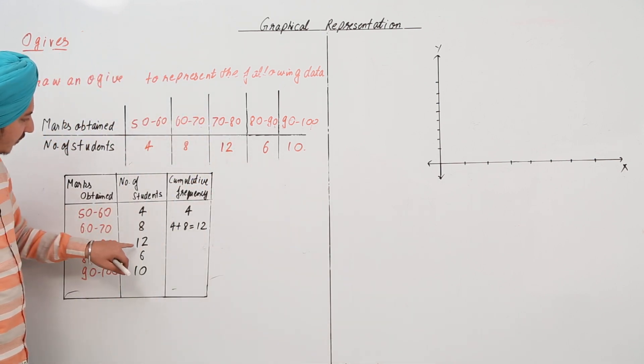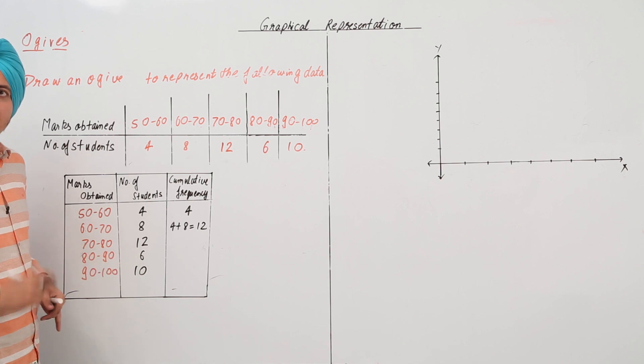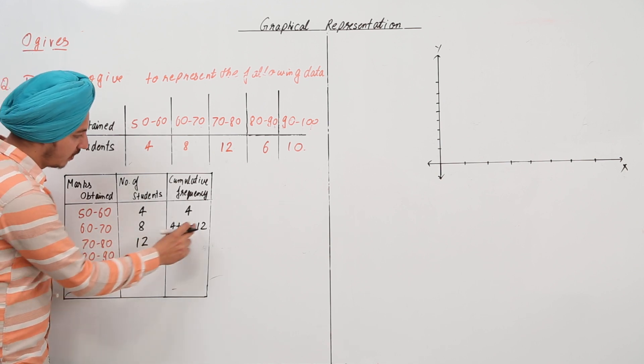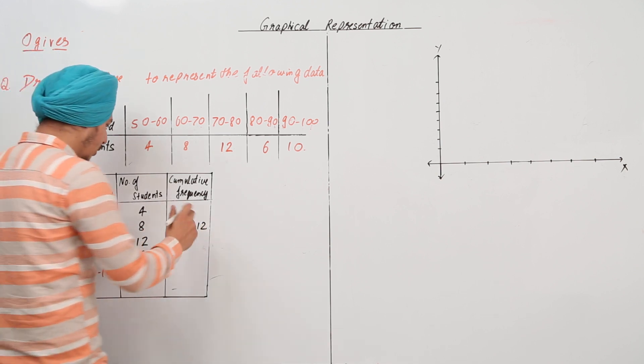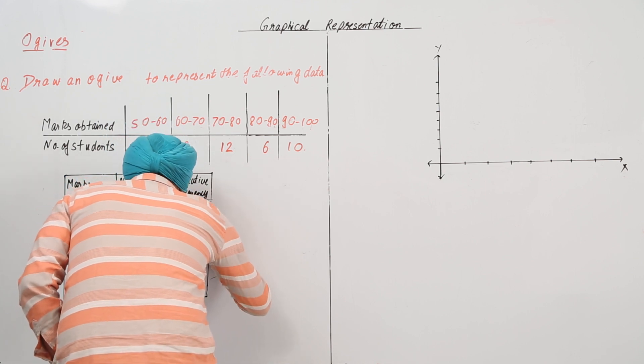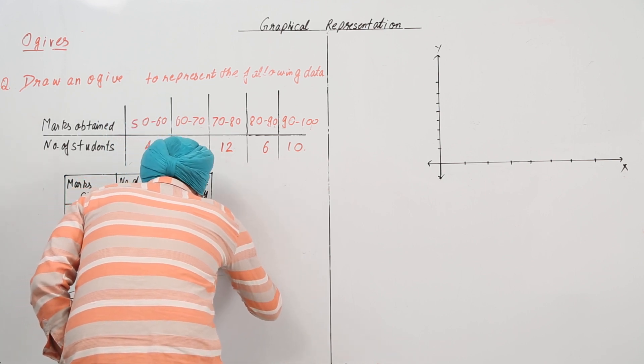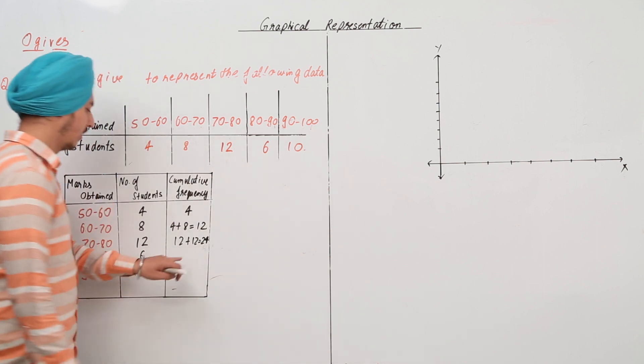Next 70 to 80, the frequency is 12. But, this will again include this 12 plus this 12 also. So, this is going to be equal to 12 plus 12, that is equal to 24.